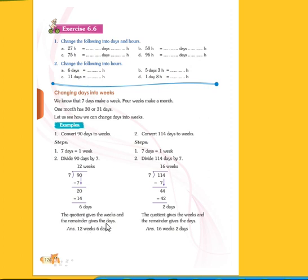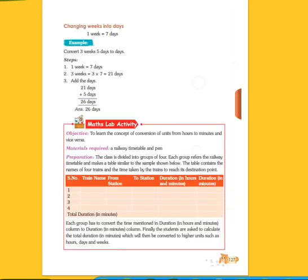The quotient gives the weeks and the remainder gives the days. 12 weeks, 6 days. When we convert 90 days to weeks, the answer we get is 12 weeks and 6 days. Now we'll move to the next page.